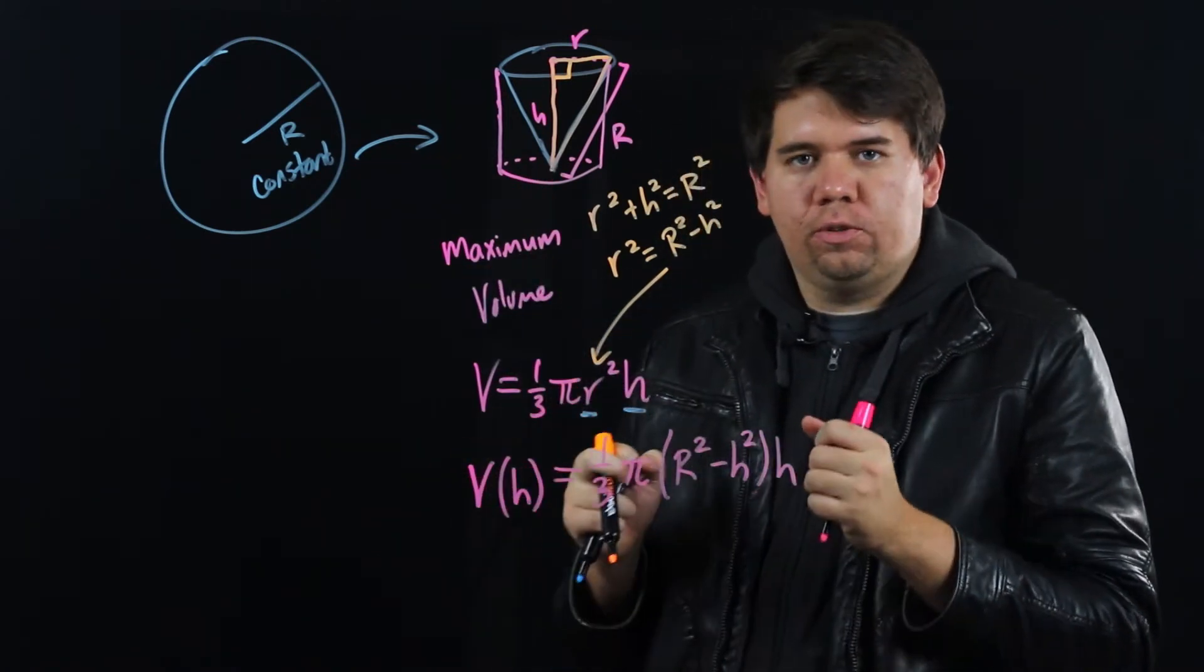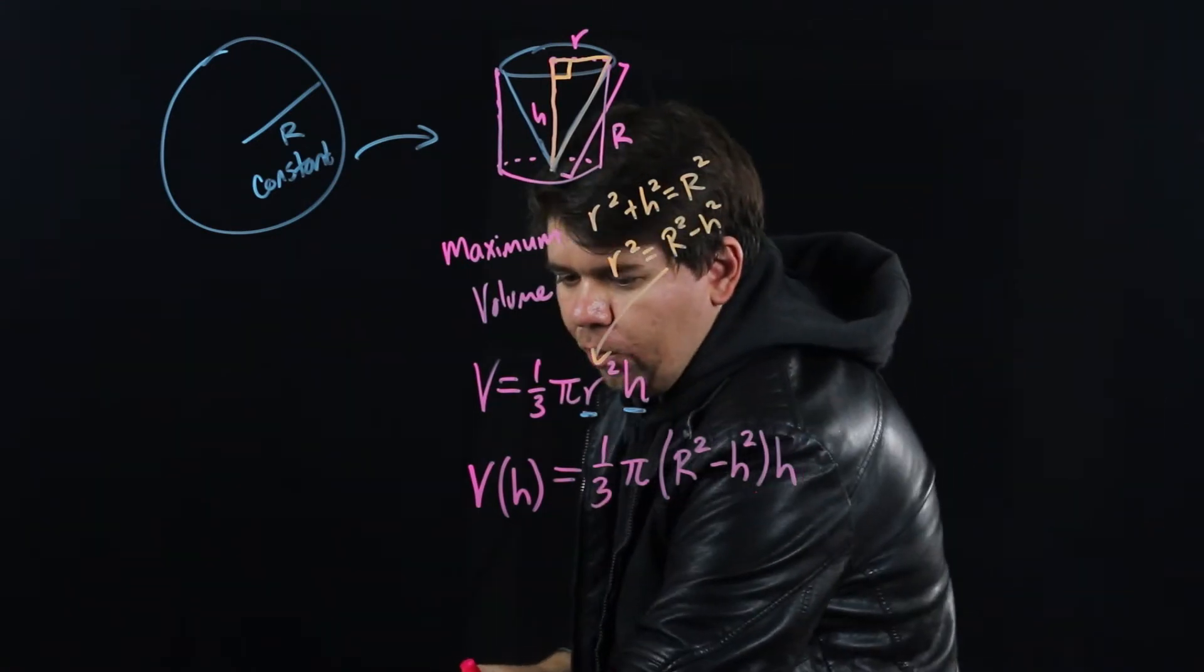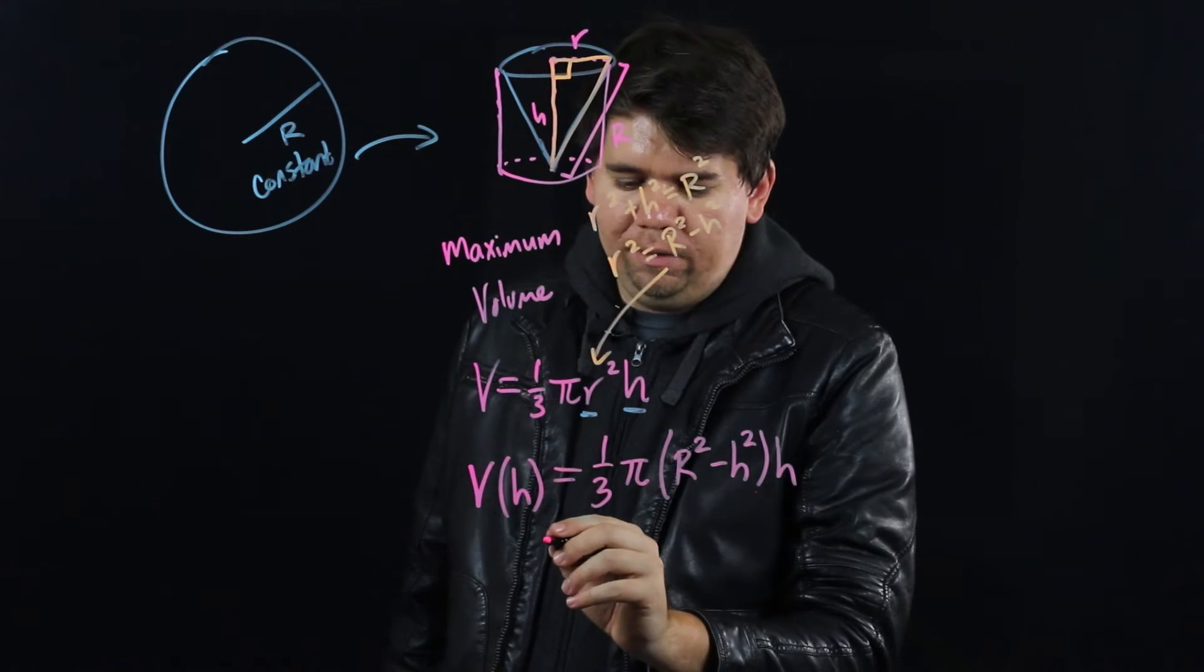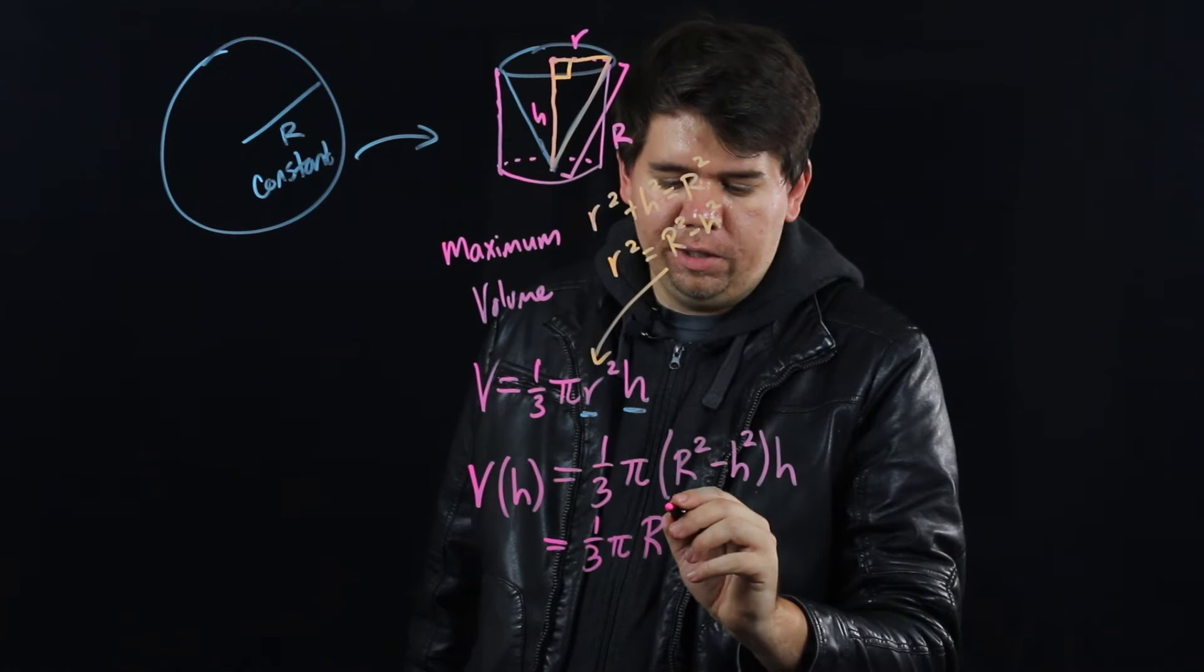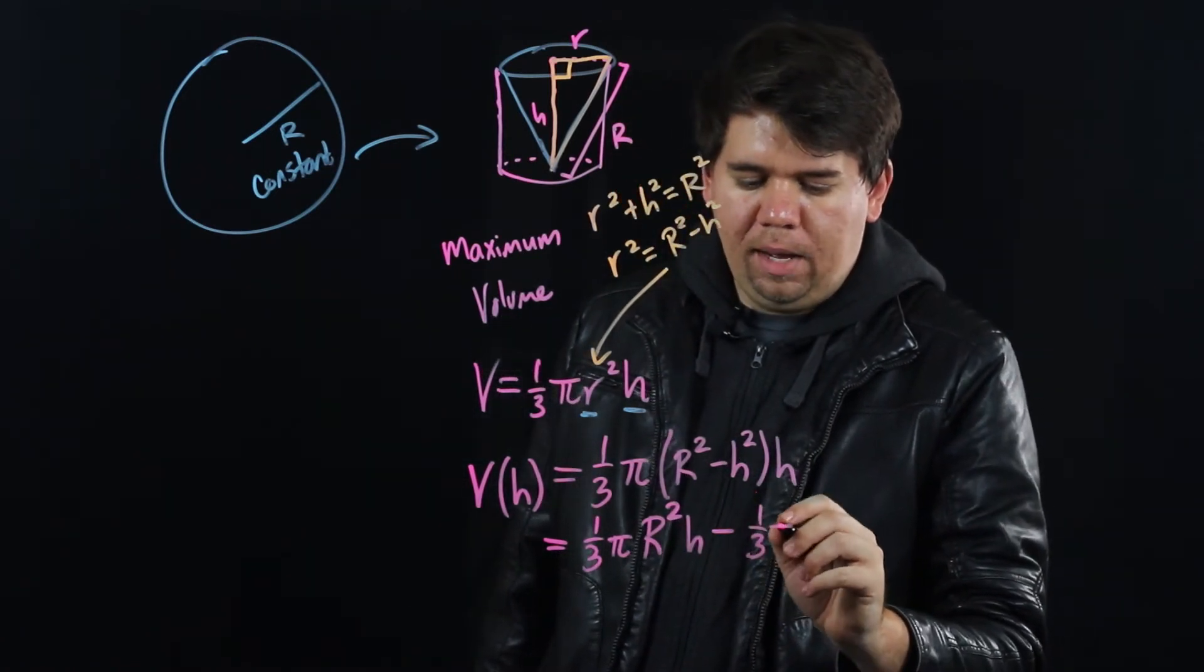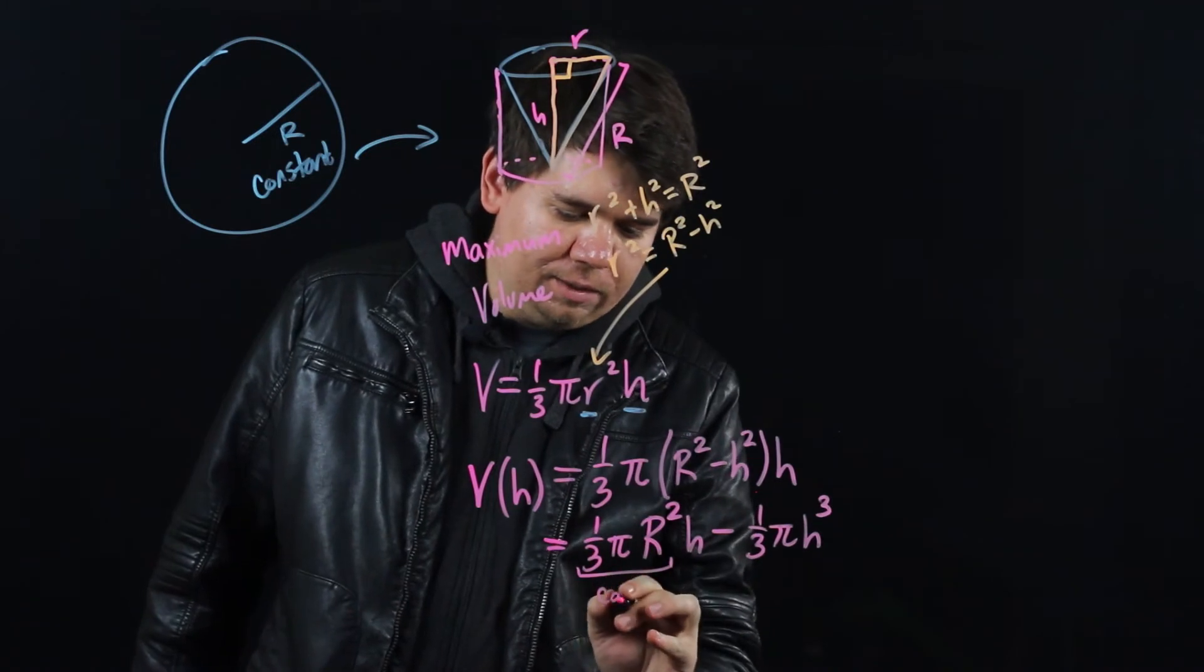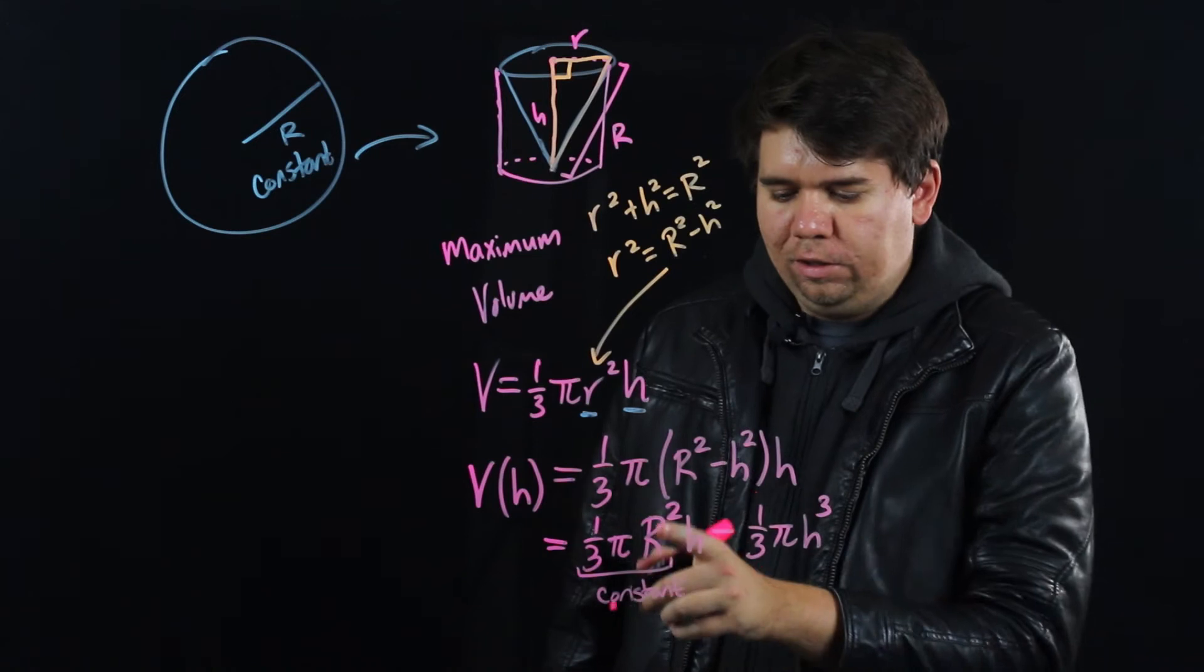Now that it's a function of just one variable, we can go ahead and calculate its derivative. Maybe I'll just expand this first so it's a polynomial. It's a little bit easier to calculate the derivative. This is just one third pi times some constant big R squared times h minus one third pi times h cubed. Here, all this stuff in the front is just a constant. Pi is a constant, big R squared is a constant, like some constant like seven.